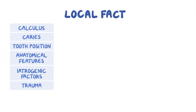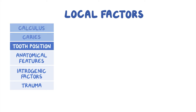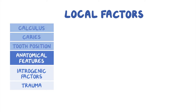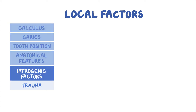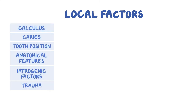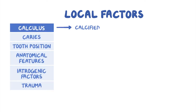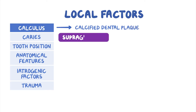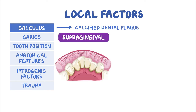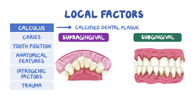Local factors include calculus, caries, tooth position, anatomical features, iatrogenic factors, and trauma. Calculus is defined as a calcified dental plaque. Supragingival calculus is located above the gingiva, while subgingival calculus is below the gingiva.